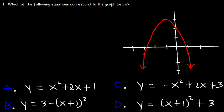The first thing we realize is that the graph opens downward, so we need a negative x squared. We can eliminate A because there's a positive sign in front of the x squared term, and we can eliminate D because there's a positive sign in front of (x+1) squared.